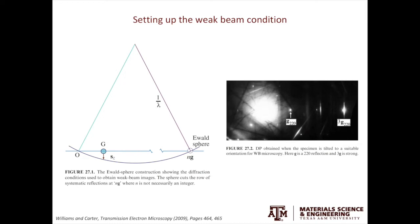The first G is the G vector we're going to use to form the image. The second G in NG is the G vector we're going to excite. In the example shown on the right, the 3G spot is excited and the intensity of 1G is relatively weak. To do the weak beam dark field image, you use the objective aperture to select the 1G spot to form the image.